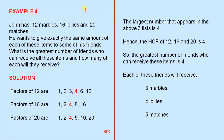Now, here's an everyday problem using HCF — this is how we can apply the idea of highest common factor. John has 12 marbles, 16 lollies, and 20 matches. He wants to give exactly the same amount of each of these items to some of his friends. What is the greatest number of friends who can receive all these items, and how many of each will they receive?